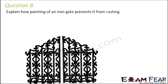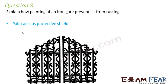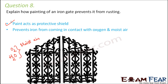Question number eight: explain how painting of an iron gate prevents it from rusting. Paint acts as a protective layer between the iron and the air and moisture. Iron rusts when it reacts with oxygen and water in the air (moist air). The paint layer breaks the contact between iron and moisture, preventing iron from coming in contact with oxygen and moisture, and therefore prevents rusting.